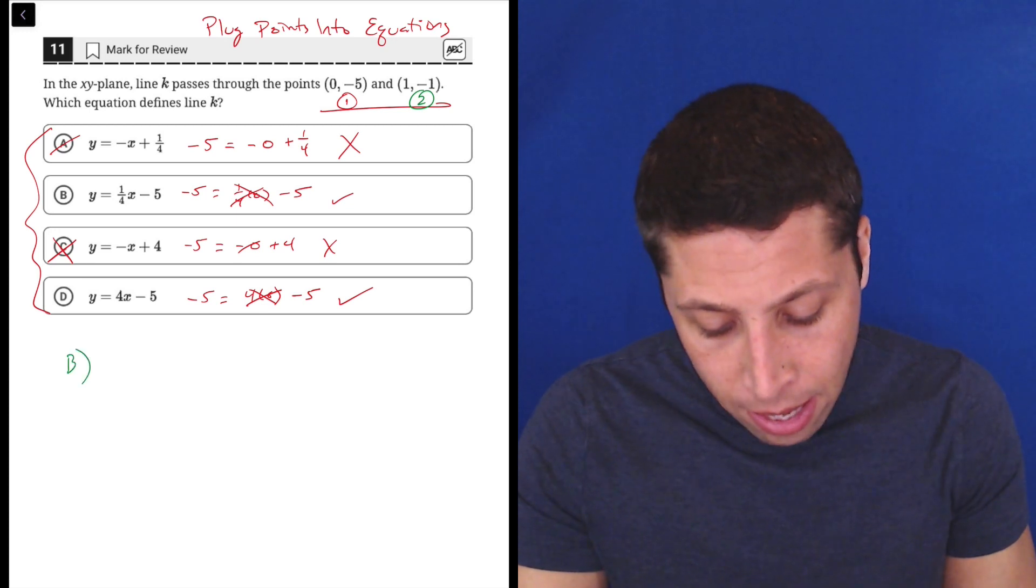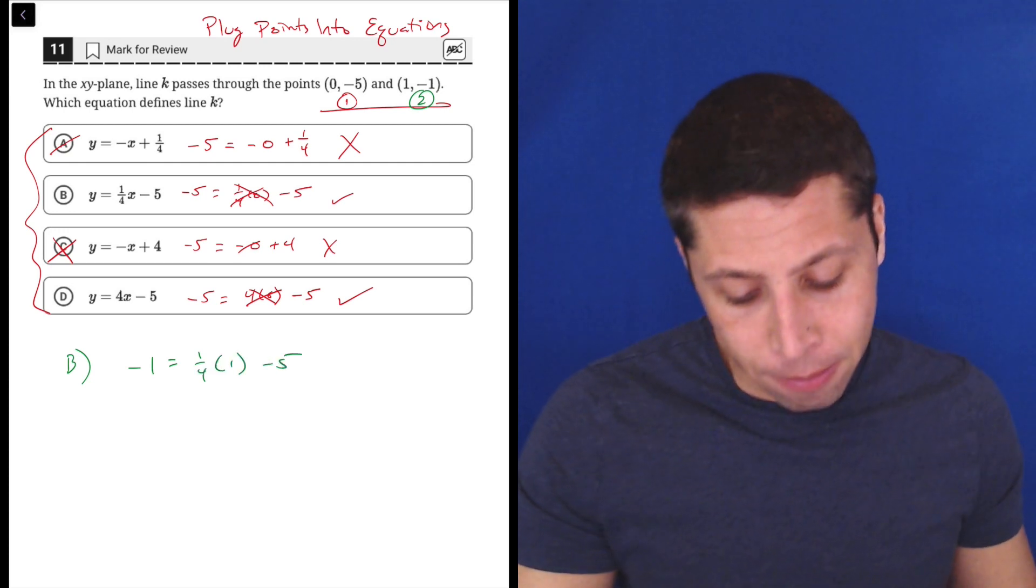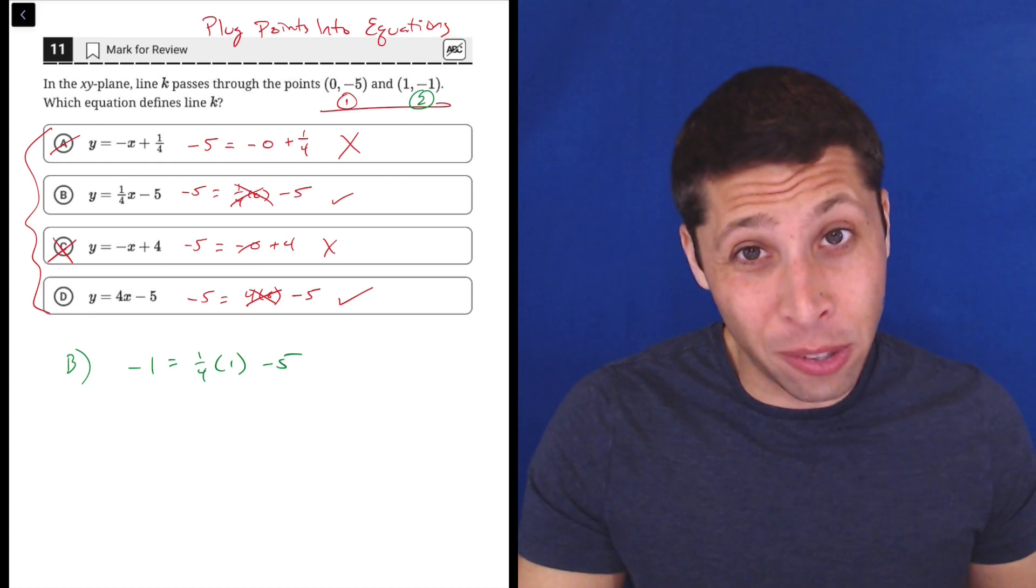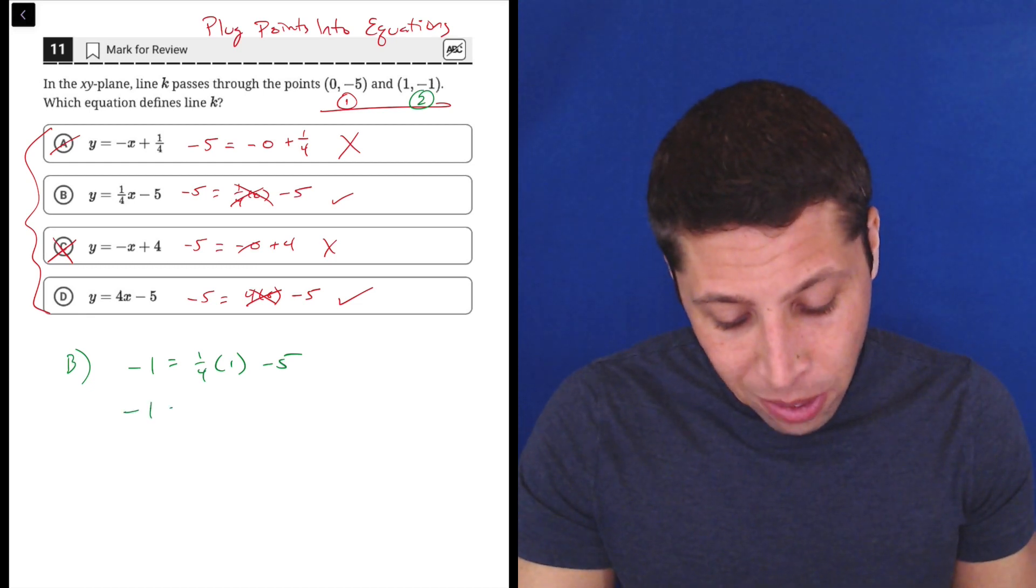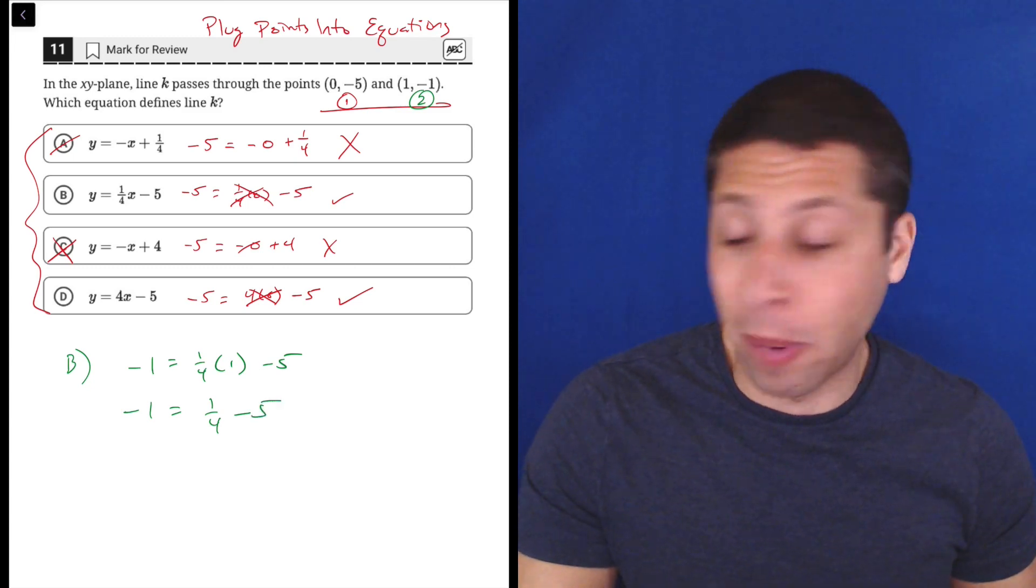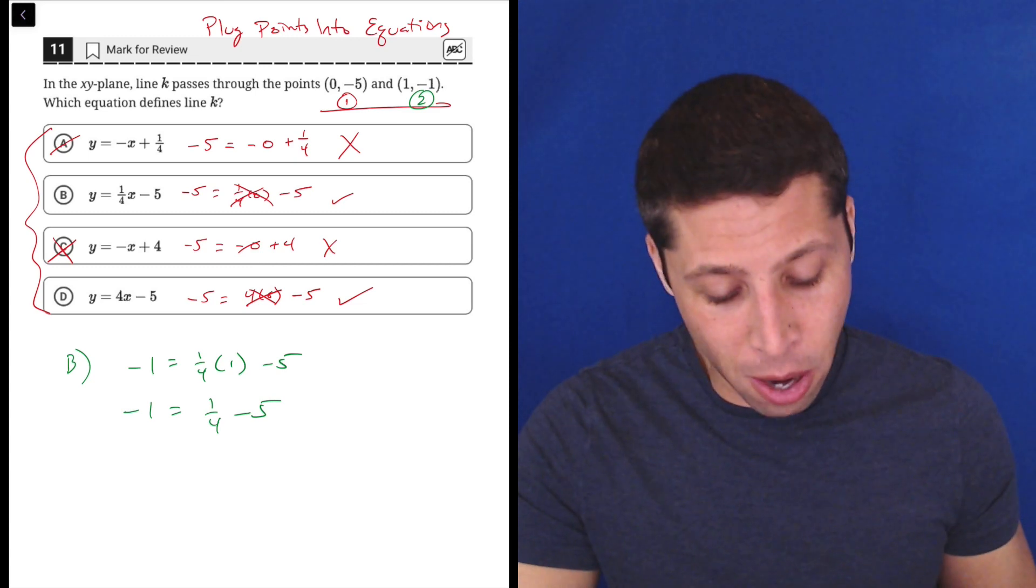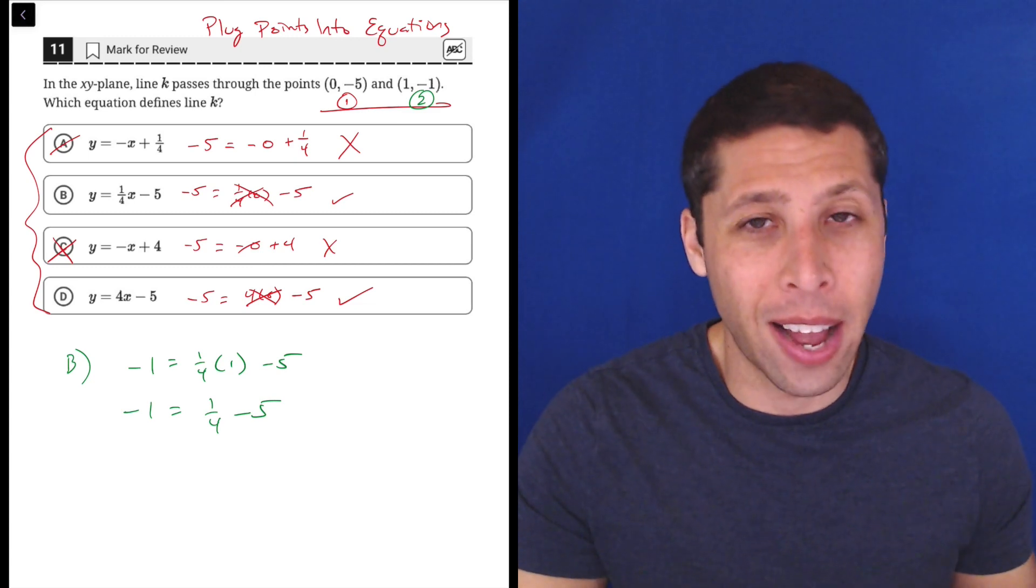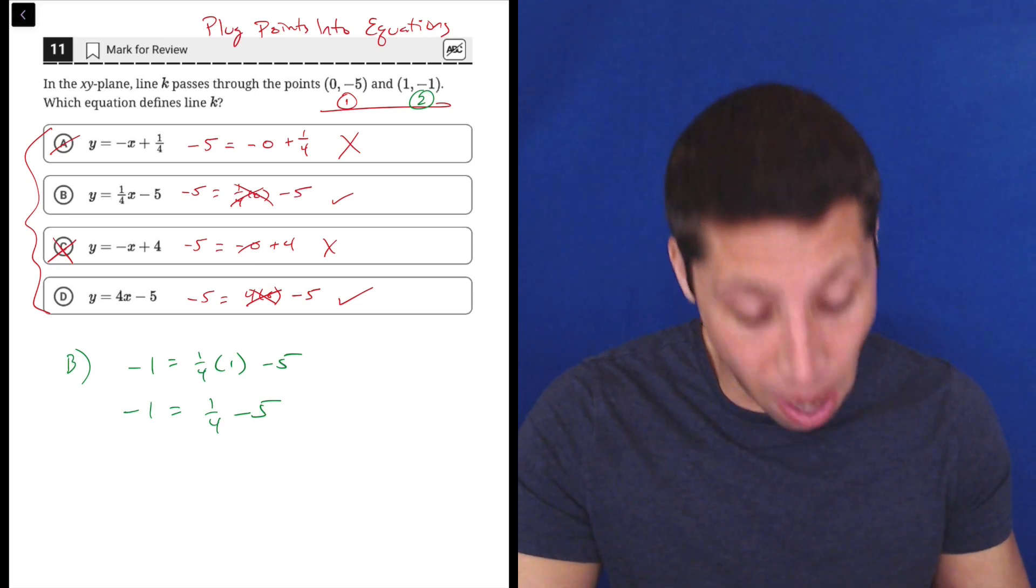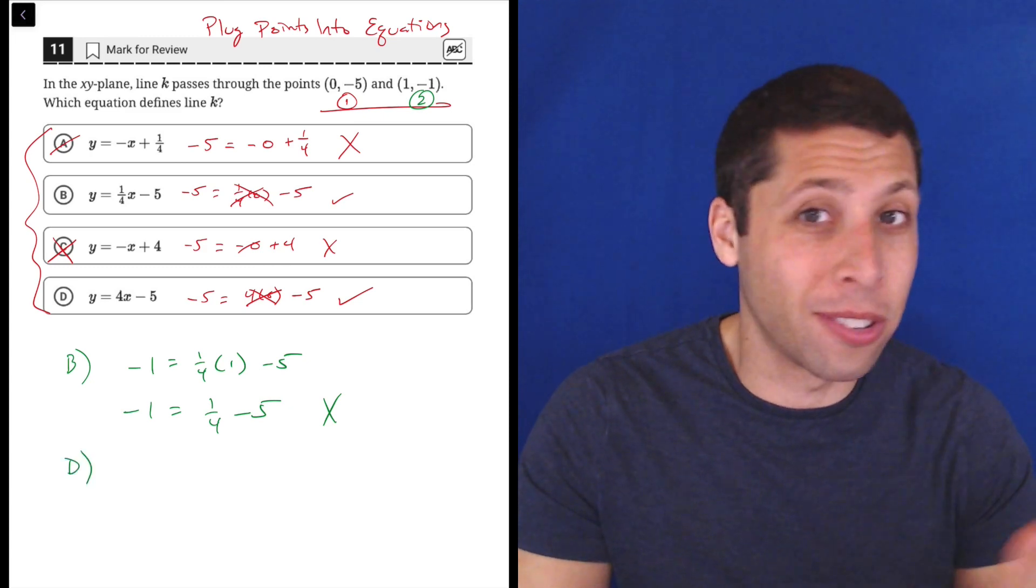-1 = 1/4(1) - 5. Well, 1/4 of 1 is 1/4. So I could continue this, I could get common denominators if I wanted to do this by hand, I could put this in the calculator if I wanted to. But I'm just smart enough to know that 1/4 - 5 is not going to give me -1. It's going to be its own little fraction, it's going to be weird. So that's not what I want, so I'm not going to bother doing math that I already know is off track.